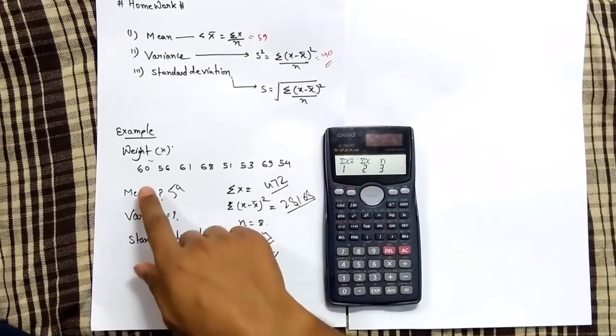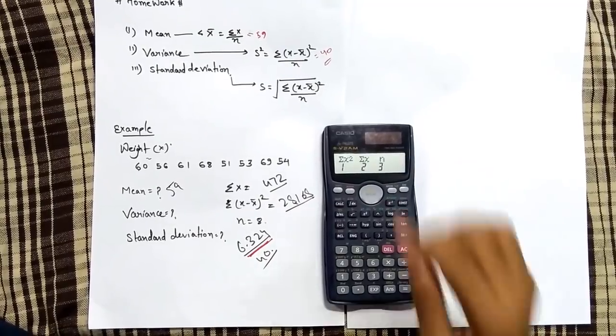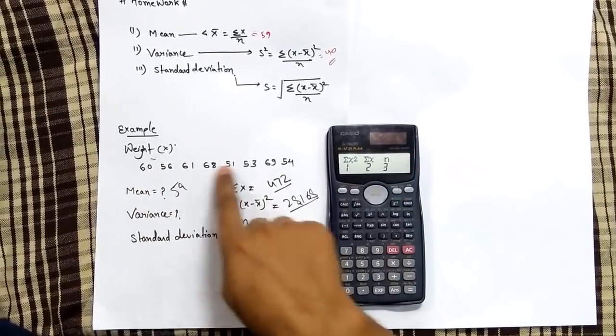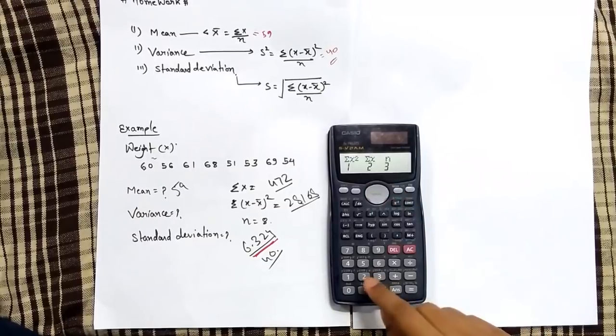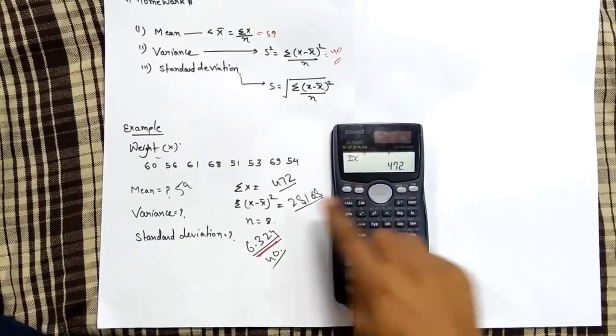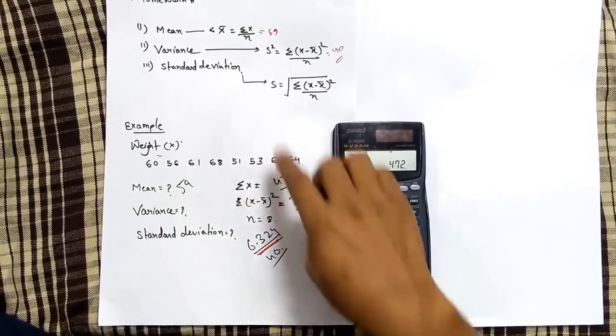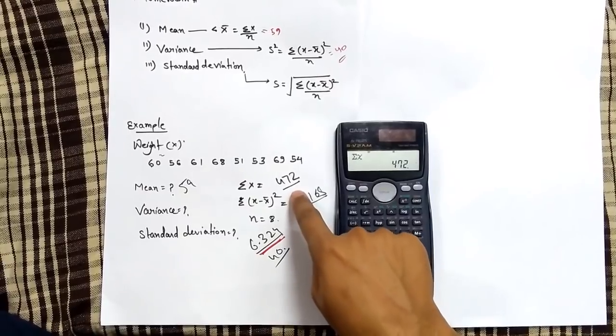You can calculate if you want to calculate what is the sum of this. Simply press 2, so you will get 472. If you sum up this value you will get 472, that means Σx equals 472. If you divide by n which was 8, you will get 59.